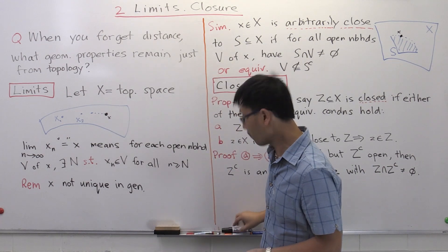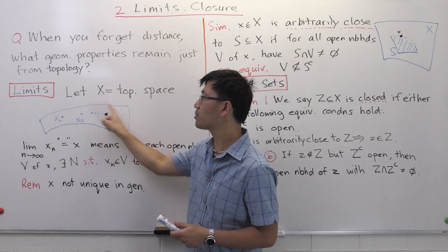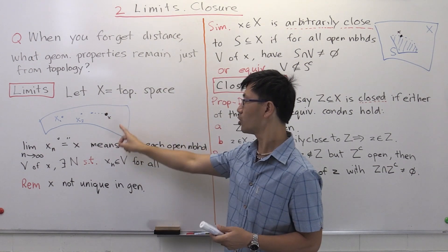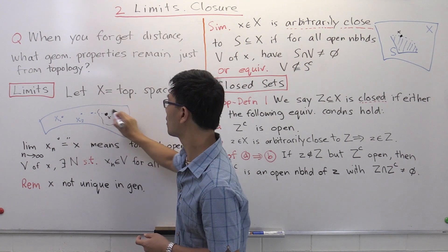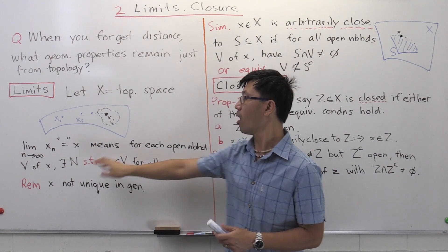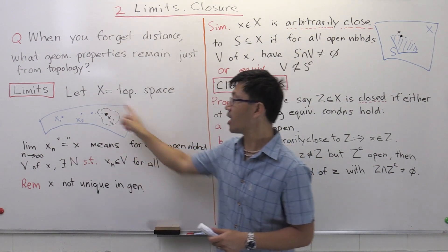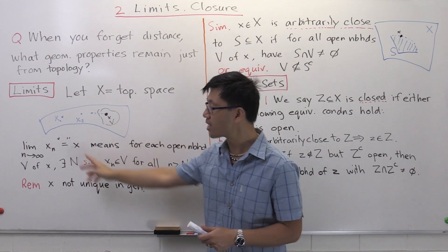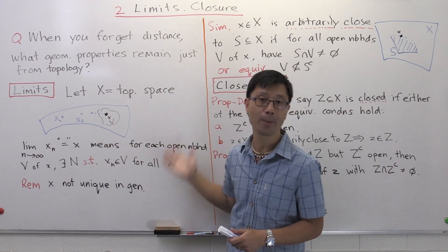Before, it used to be: you pick any epsilon, and then eventually you get within epsilon. So instead of looking at epsilon balls around x, you talk about open neighborhoods. What I want to do is replace the epsilon with: for each open neighborhood V of x, like that one there, you want that you're eventually inside here. That means for some large enough positive integer N, xn will be inside this open neighborhood for all n bigger than or equal to N. This is just the same as your usual definition, except we've replaced the epsilon ball with an arbitrary open neighborhood.